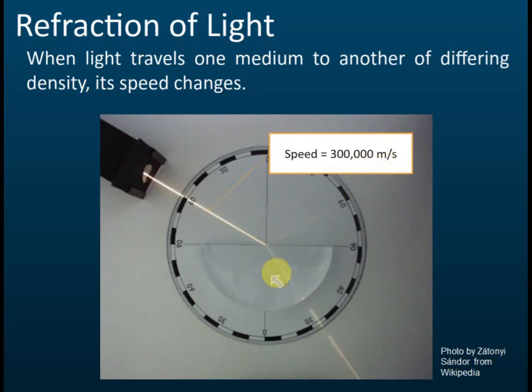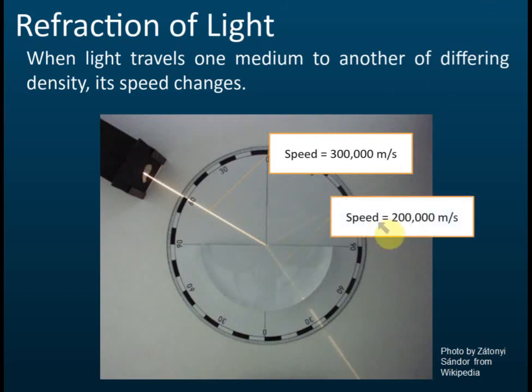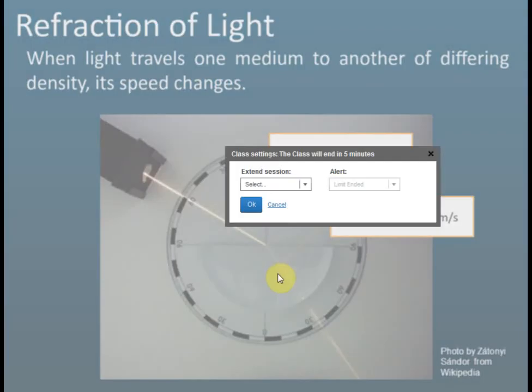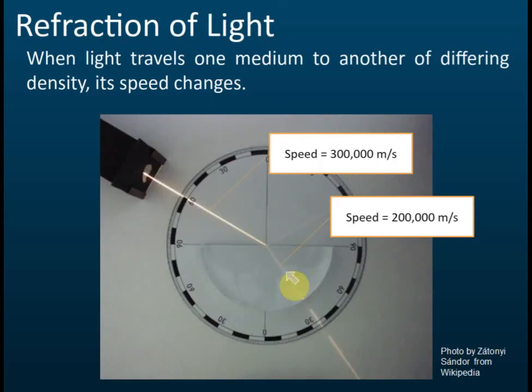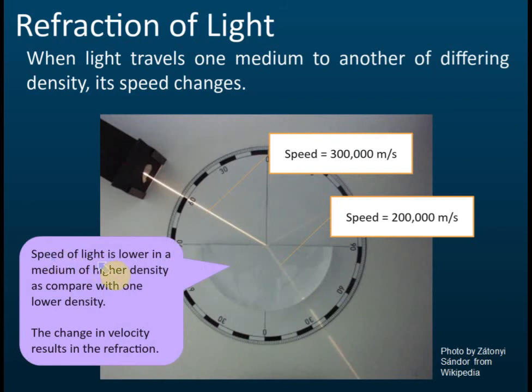This is glass. If you move into the glass, the speed of the wave will reduce to about 200,000 meters per second. So the higher the density, the lower the speed. Speed of light is lower in mediums of higher density, and the change of speed will cause refraction.